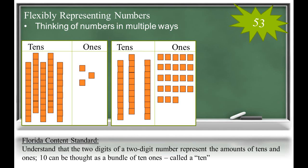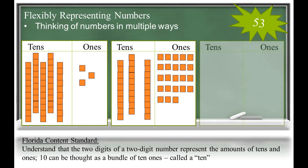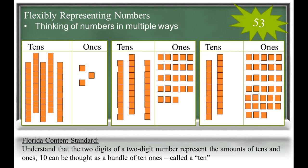This process of exchanging or trading a ten for ten ones helps children build a foundation for understanding the place value system. With that said, there are many combinations of tens and ones that could represent this number 53. This last one shows two tens and 33 ones.